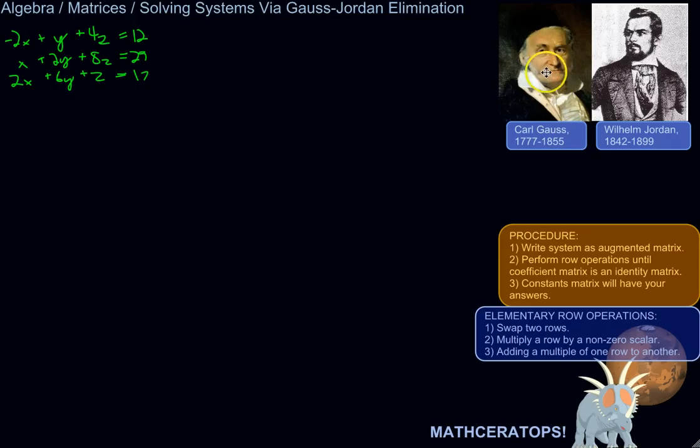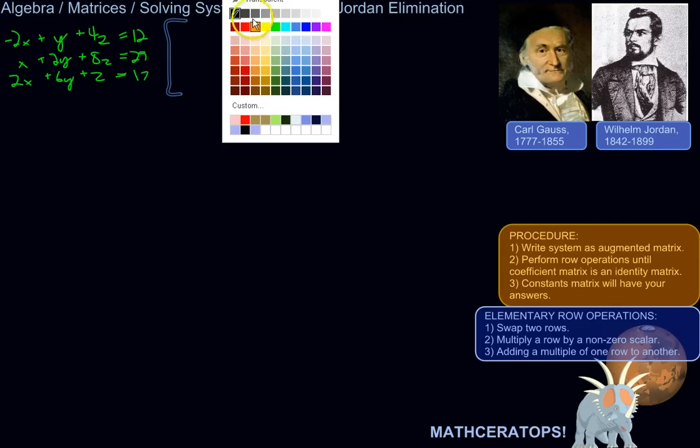But the basic idea is that we want to end up with an identity matrix, and then the constant matrix will be our answer. So let me just represent this as a matrix first.